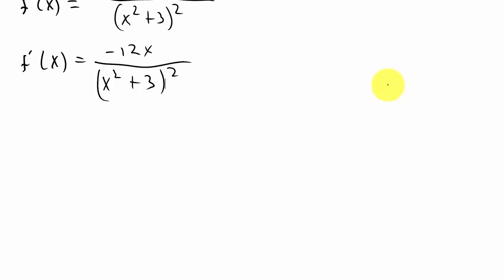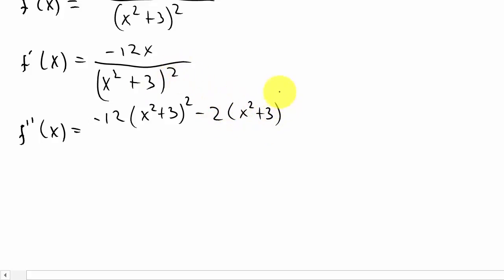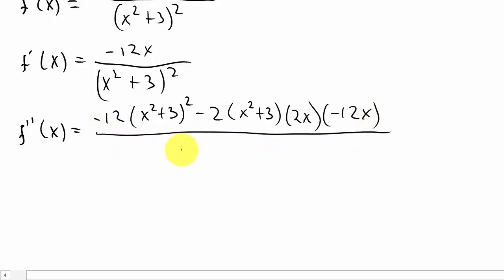Now to find the second derivative we'll use the quotient rule again. F double prime of x is the derivative of the numerator, negative 12, times the denominator, minus the derivative of the denominator times the numerator. To take the derivative of the denominator we use the chain rule: 2 times (x squared plus 3) to the first power times 2x. Then that whole expression is multiplied by the numerator, negative 12x, all over the denominator squared.